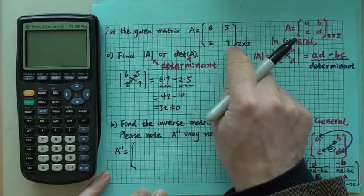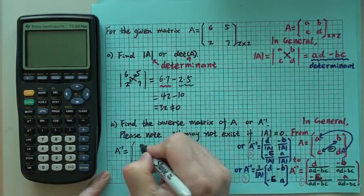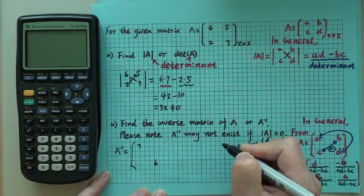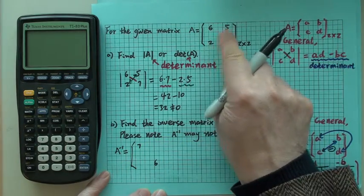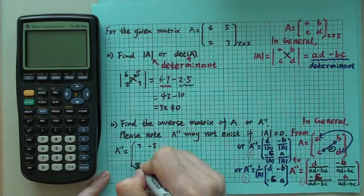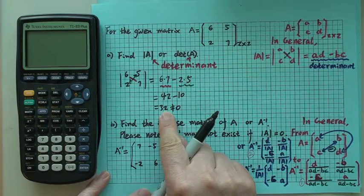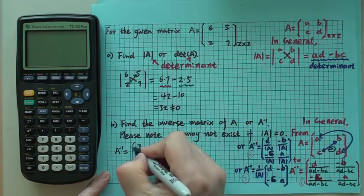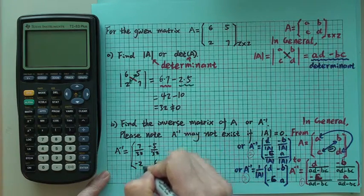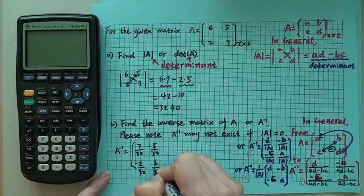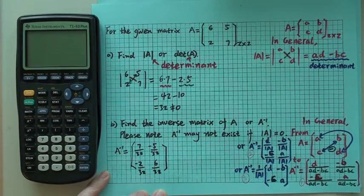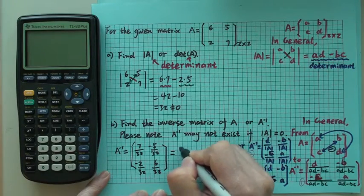you switch those two elements, so 6 goes down here, 7 goes up, and then you put negative sign in front of those two: negative 5, negative 2. And then divide it by this, 32.